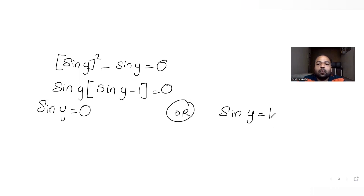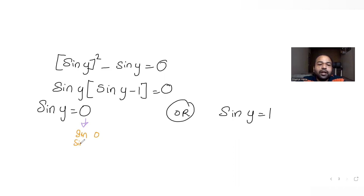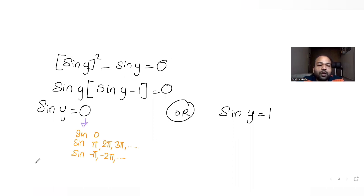For sin(y) = 0: sine is zero at 0, π, 2π, 3π, −π, −2π — all integral multiples of π. So y = nπ where n belongs to the set of integers (n = ..., −2, −1, 0, 1, 2, ...).